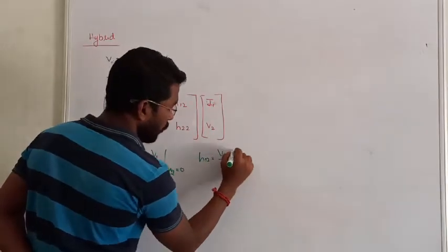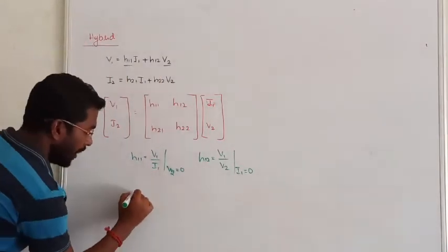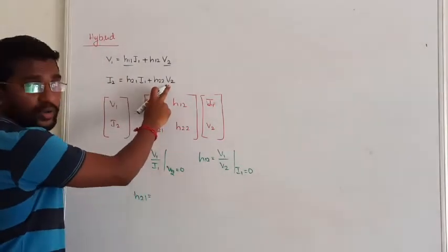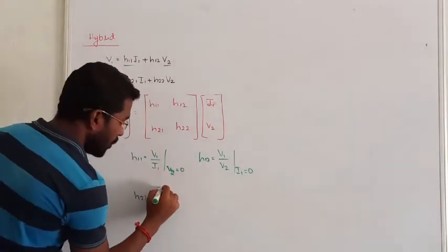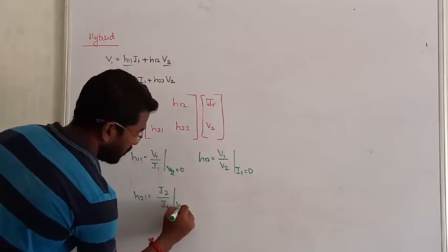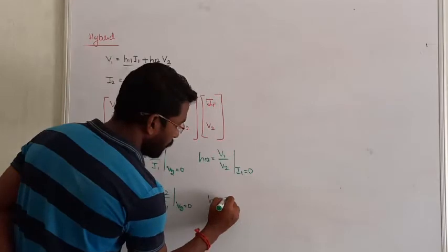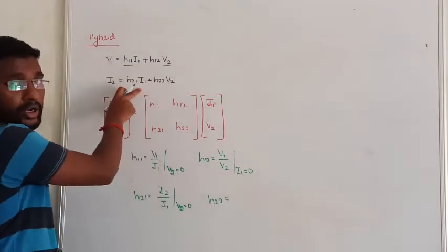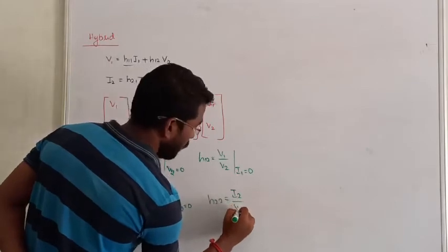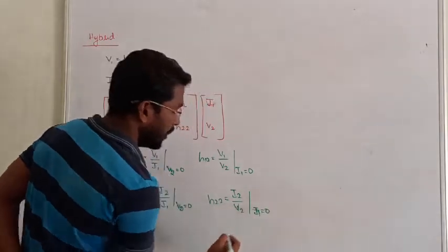H21 is found when V2 = 0, giving H21 = I2/I1 — the forward current gain under short-circuit output condition. H22 is found when I1 = 0, giving H22 = I2/V2 — the output admittance under open-circuit input condition.